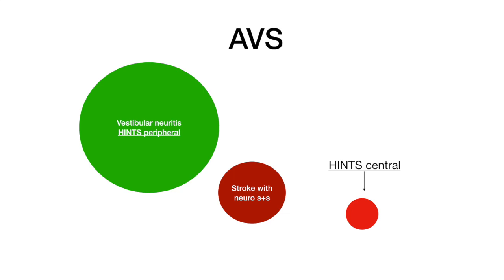Some patients will be having a posterior circulation stroke with other clinical features that would make you think right away that they're having a stroke, like new dysarthria or diplopia. HINTS is less relevant in these patients, as you're going to work them up for stroke no matter what their HINTS exam shows. A smaller yet group will be having a stroke where it's very difficult to tell it from vestibular neuritis. This is where a HINTS central result can be used to identify those subtle cerebellar strokes which look very much like vestibular neuritis.